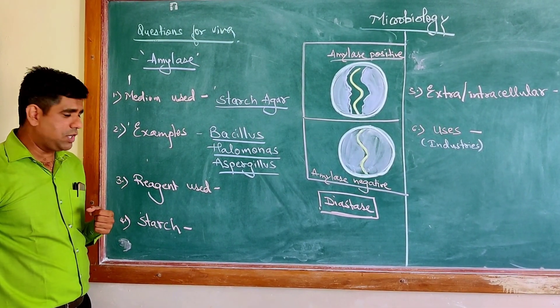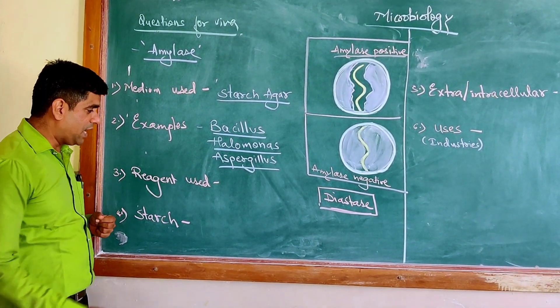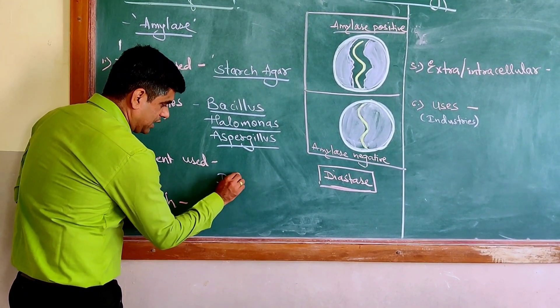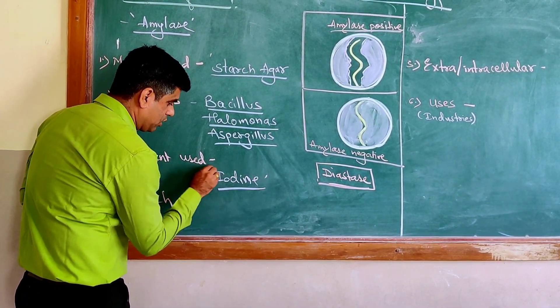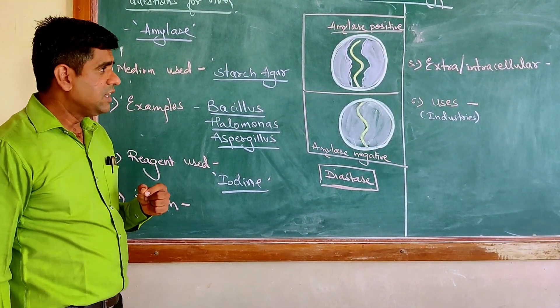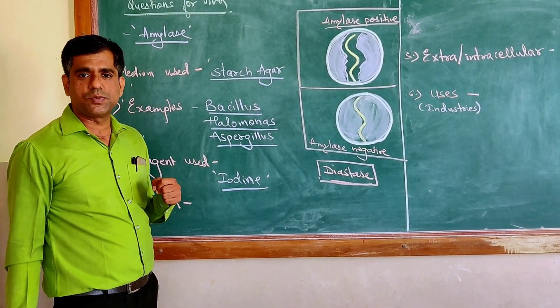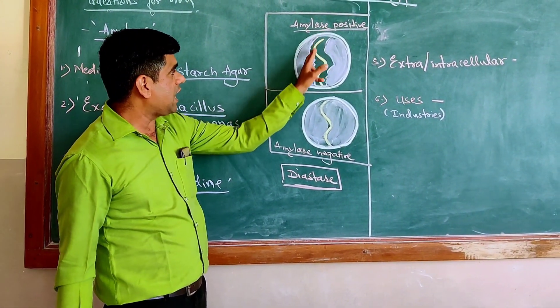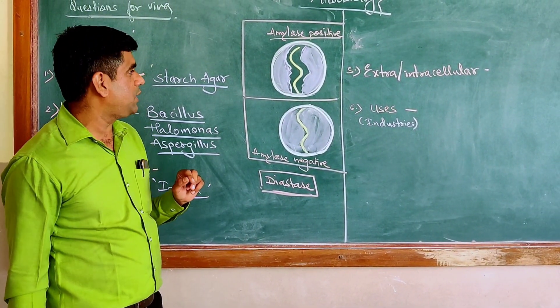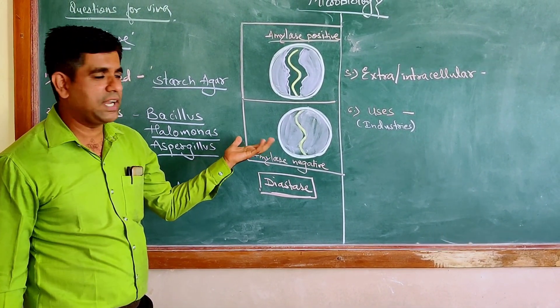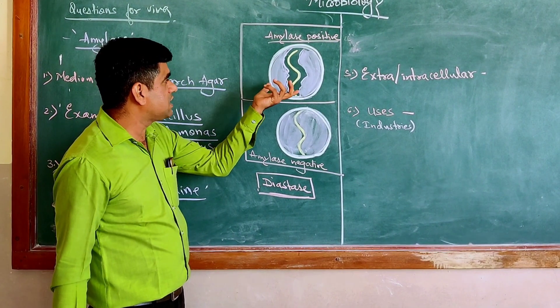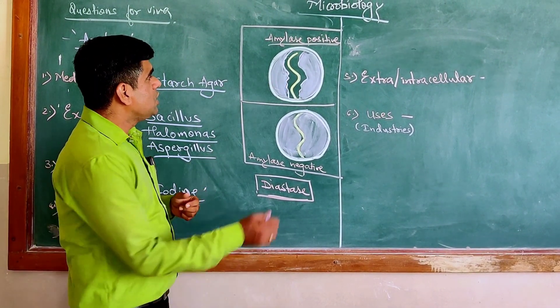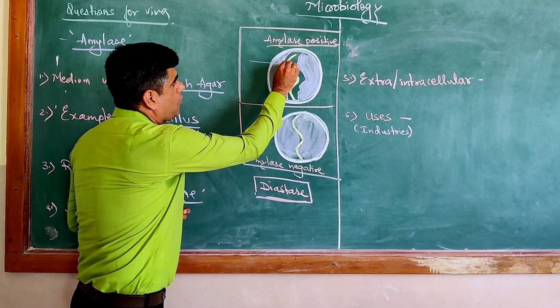What is the reagent used to detect this presence of amylase? It is iodine. The Gram's iodine solution can be used for detecting whether the organism is producing amylase or not. As you can see that after inoculation on the starch agar plate and incubation for 24 or 48 hours and pouring this plate with the iodine solution, you can clearly see this zone of hydrolysis.